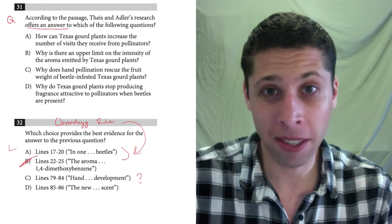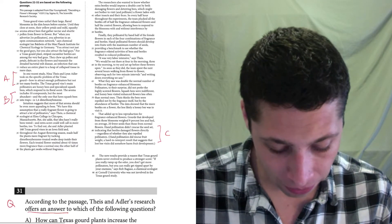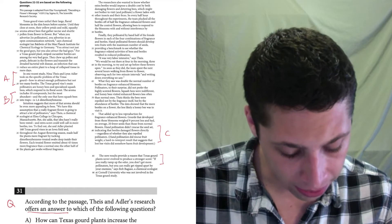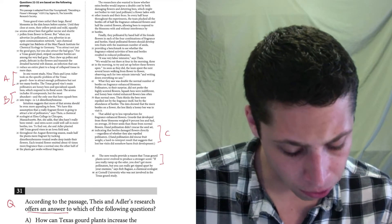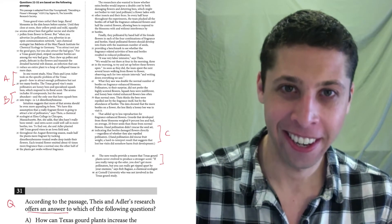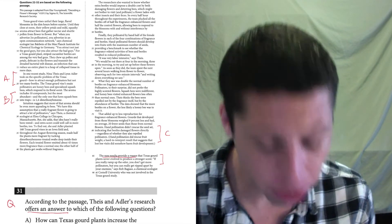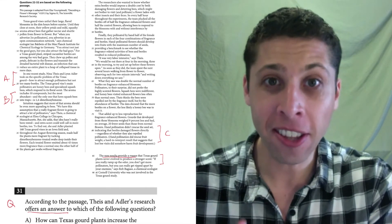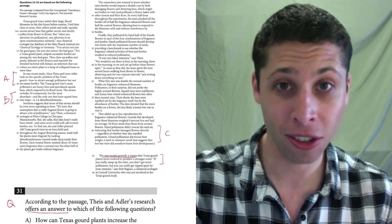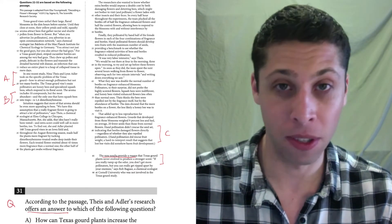Let's look at D, 85 to 86. The new results provide a reason that Texas gourd plants never evolved to produce a stronger scent. That is evidence that they answered a question. The new results provide a reason. That's telling us that the experiment that they did had results that gave a reason, an answer to some question.